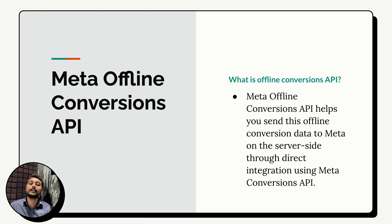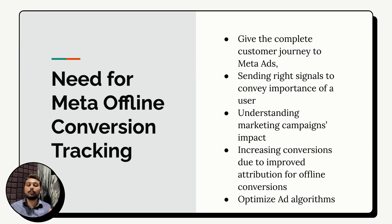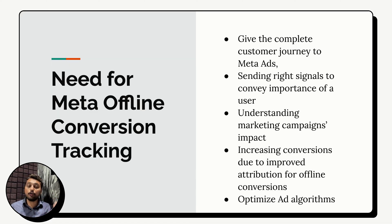Meta Offline Conversions API helps you send this offline conversion data back to Meta on the server side through direct integration using Meta Conversions API. Why do you need it? Number one: it gives you the complete picture of the customer journey and helps you understand how the customer is interacting with your business both on and off the web. This data helps Meta Ads also get a complete picture, and it sends the right signals to Meta Ads conveying the importance of each conversion.